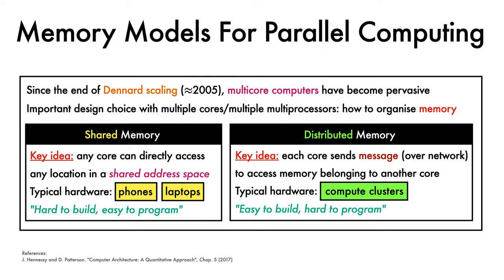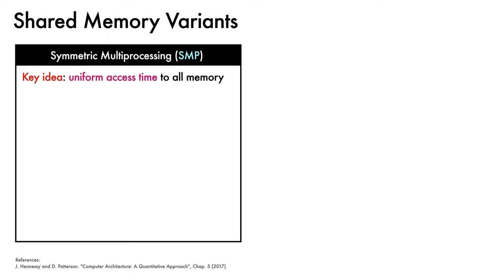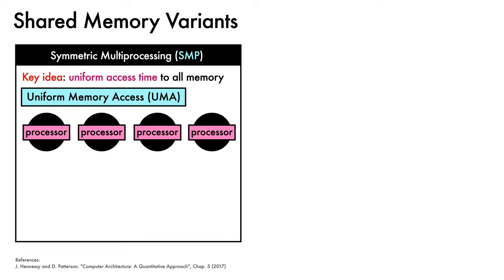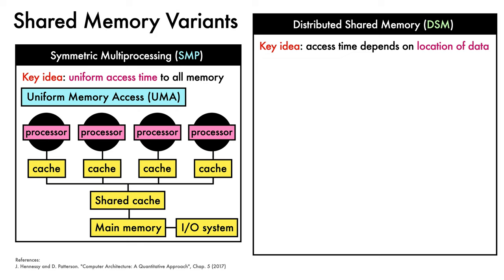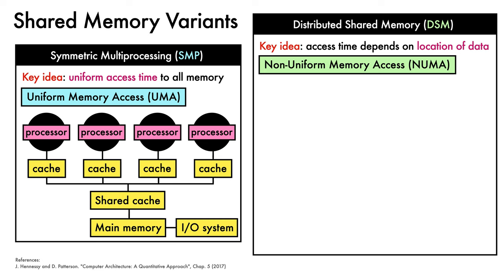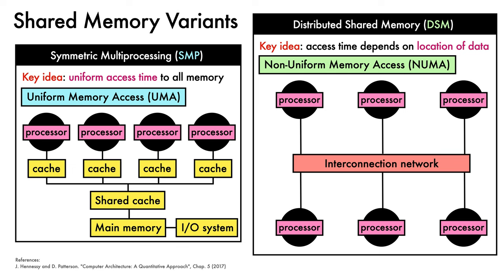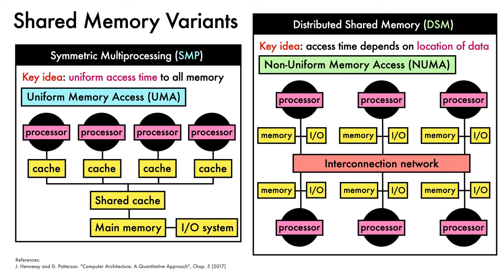There are multiple variants of shared memory. One approach, known as symmetric multiprocessing or SMP, has all processors with uniform access time to all memory — also called uniform memory access (UMA). It can be achieved by arranging processors, each with a private cache, so they all share a common cache and main memory. The second variant, distributed shared memory, has access time that depends on the location of the data, so these systems are often called non-uniform memory access (NUMA). Here processors communicate through an interconnection network, but the memory address space is still shared while physical memory is located close to each processor.